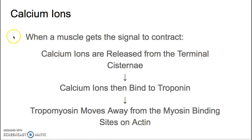When a muscle gets the signal to contract — an action potential from a motor neuron to the muscle — that action potential travels down the muscle cell and triggers the release of calcium ions from the terminal cisternae, which are the wide ends of the sarcoplasmic reticulum. Those calcium ions bind to troponin, shifting it like a lock and key, so that the tropomyosin moves away from the myosin binding site it's been covering. Once this happens, we have what's called the power stroke.